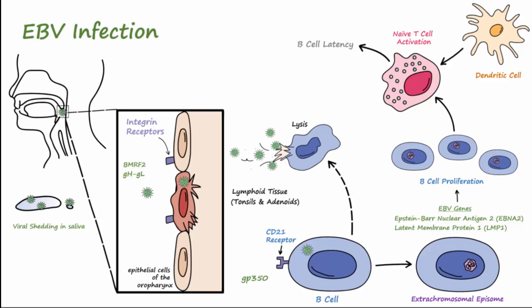Viral shedding in the saliva will begin after infection, with its highest concentration in the saliva for the following 10 to 14 days in children and 30 to 50 days in adults, and this will persist in smaller amounts throughout life. Even after establishing latency, the virus may be reactivated with changes in the host and undergo lytic phases again.